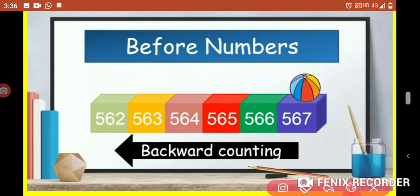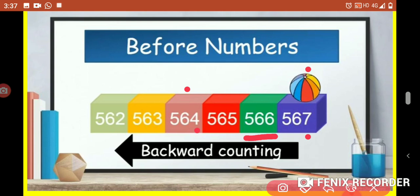Before numbers — suppose I select the number 567. What number comes before 567? Before means 'pehle'. For that, look at the ones place of the number. In the ones place there is 7, and before 7 comes 6, so 566 comes before 567. Suppose I select 564 — in the ones place the number is 4, so before 4 comes 3, meaning 563 comes before 564.